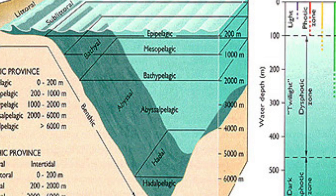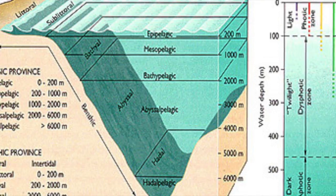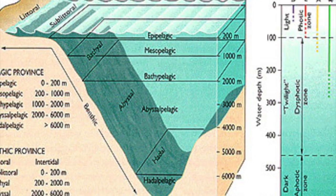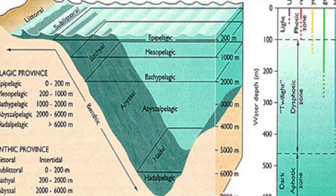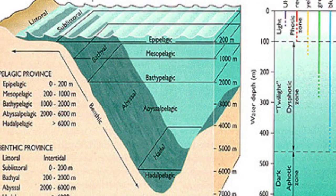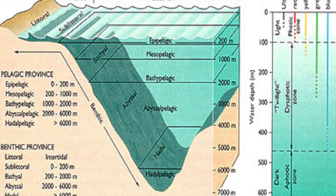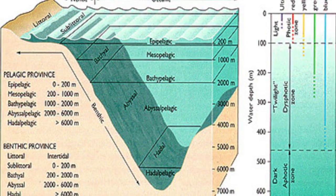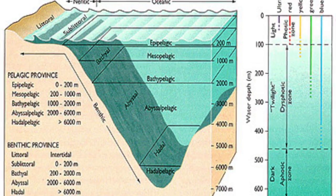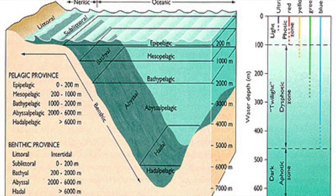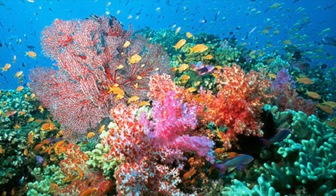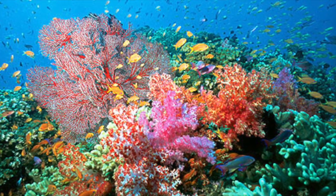The last zone I'll be discussing is the open ocean. Sunlight generally does not extend below 650 feet in this area. The three zones are the upper zone, which is where the base of the food web occurs, secondly the benthic zone, and thirdly the photic zone.